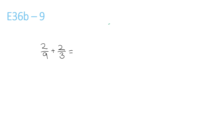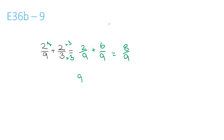This one here, the LCM of 9 and 3 is 9, so you have to times this one here by 3 — times the top by 3 — to get 2 over 9, plus 6 over 9. Adding those together gives you 8 over 9.